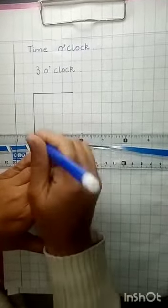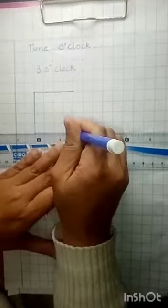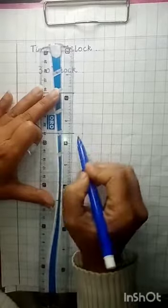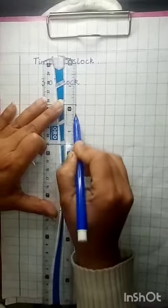Now again 1, 2, 3, 4 blocks from this side. And then 4 from here: 1, 2, 3, 4. And draw a straight line.